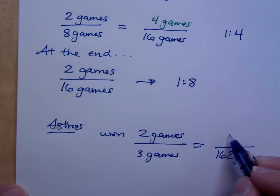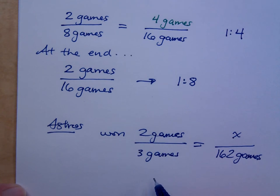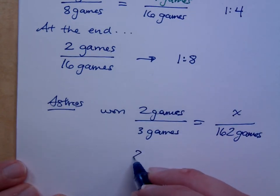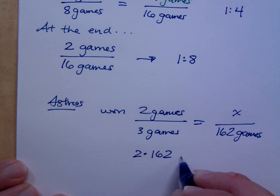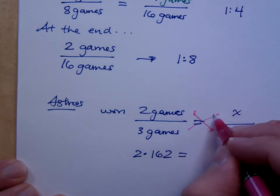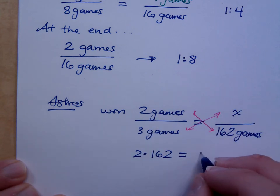What if you make this the variable X, right? So, the cross products being equal, 2 times 162 equals what? 2 times 162 equals 3 times X.